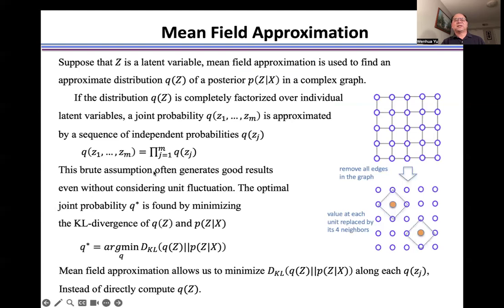Suppose that Z is a latent variable. Mean field approximation is used to find the approximate distribution q(Z) of a posterior p(Z|X) in a complex graph here. If the distribution q(Z) is completely factorized over individual latent variables, a joint probability q(z_1,...,z_m) is approximated by a sequence of independent probabilities q(z_j). Namely, joint probability of z_1 to z_m is equal to product of q(z_j).